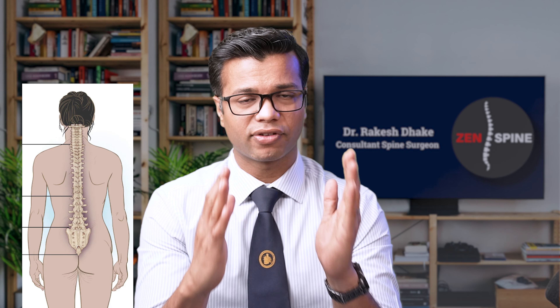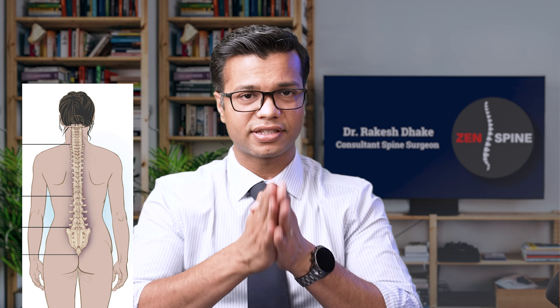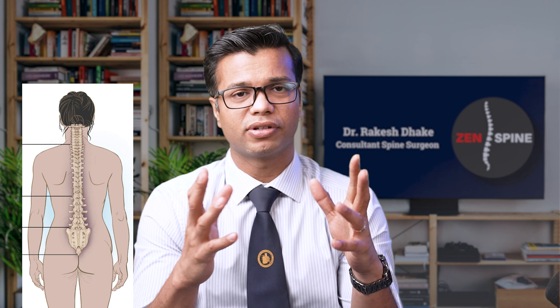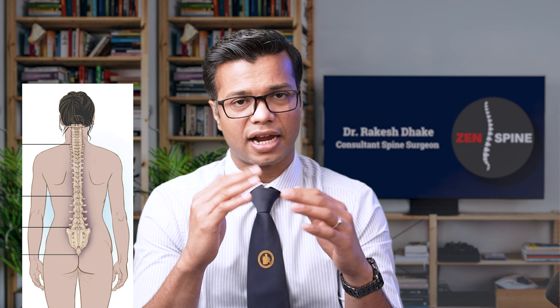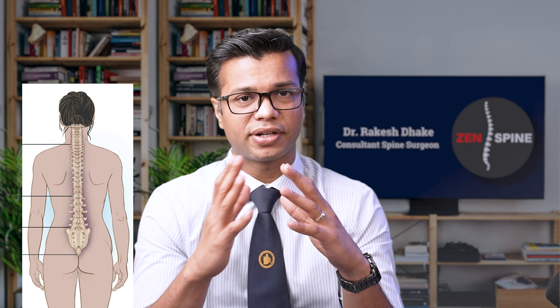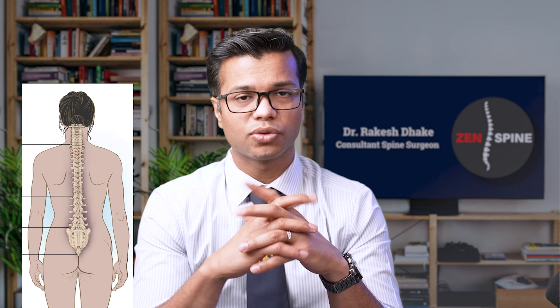Talking about spinal curvature, if you look at the spine from the front, it appears as a straight single column of a number of vertebrae — 33 vertebrae, stacked on top of each other, separated by intervertebral discs.